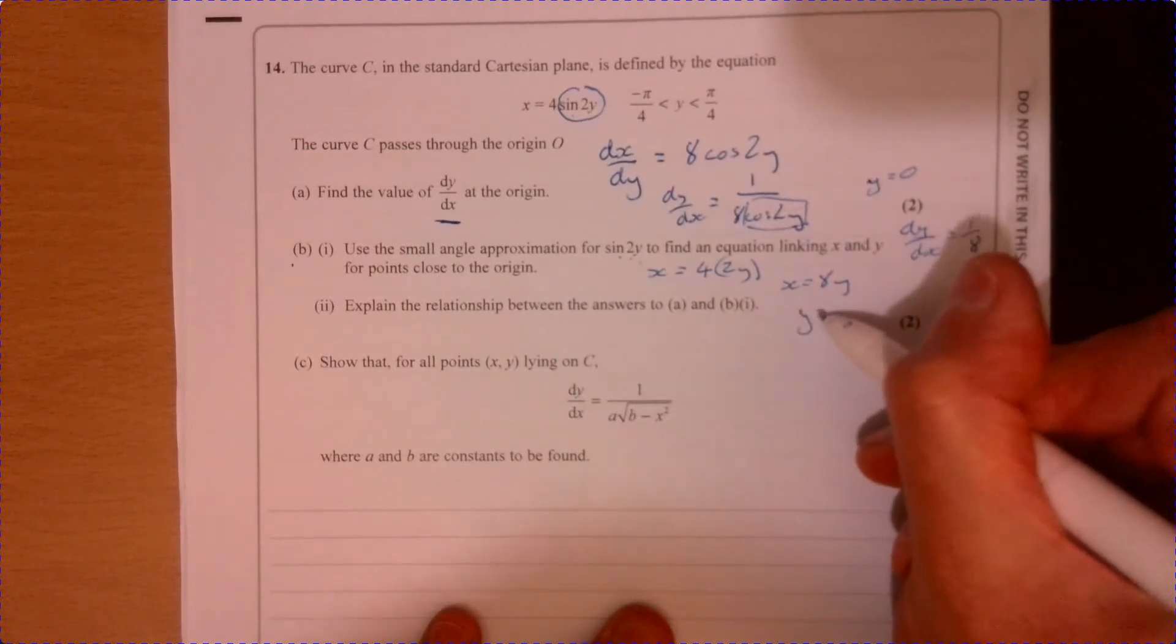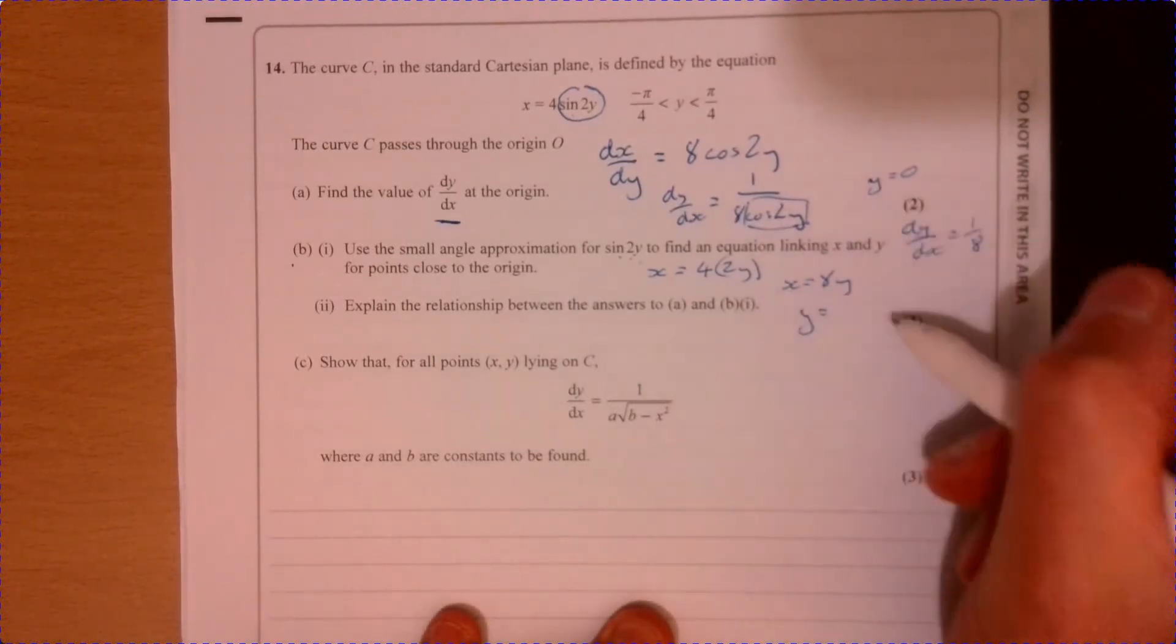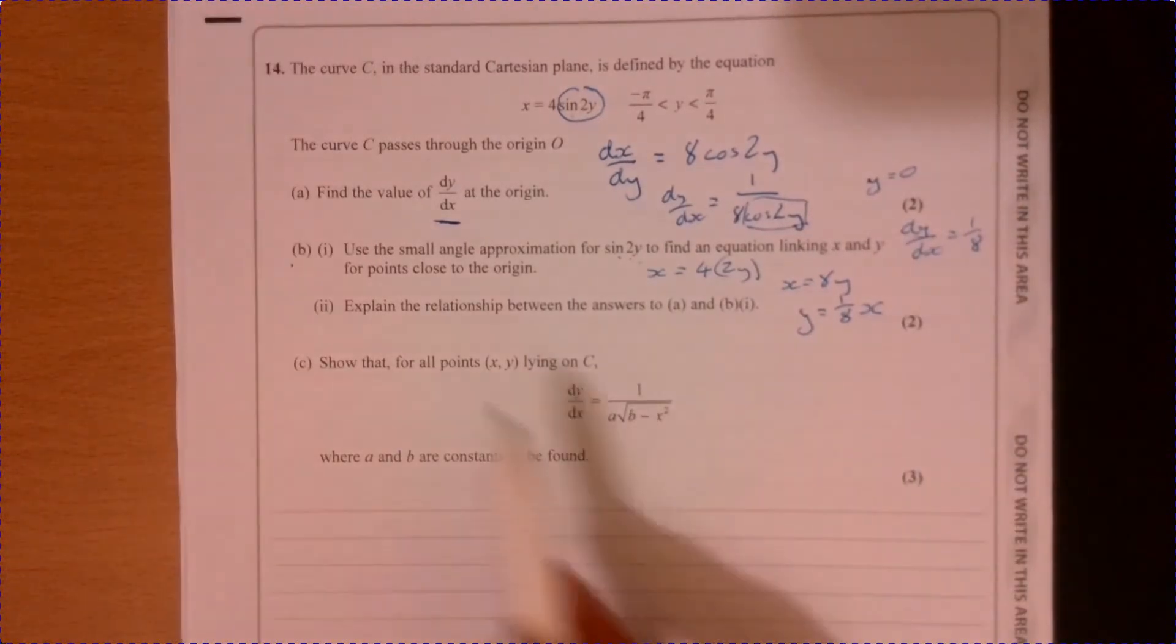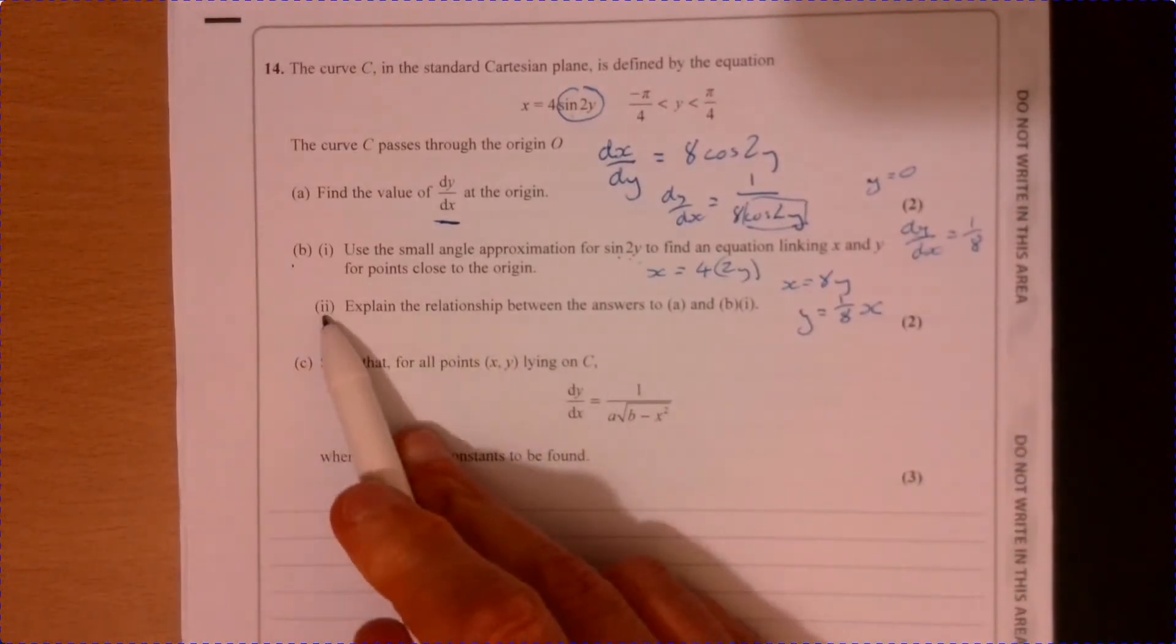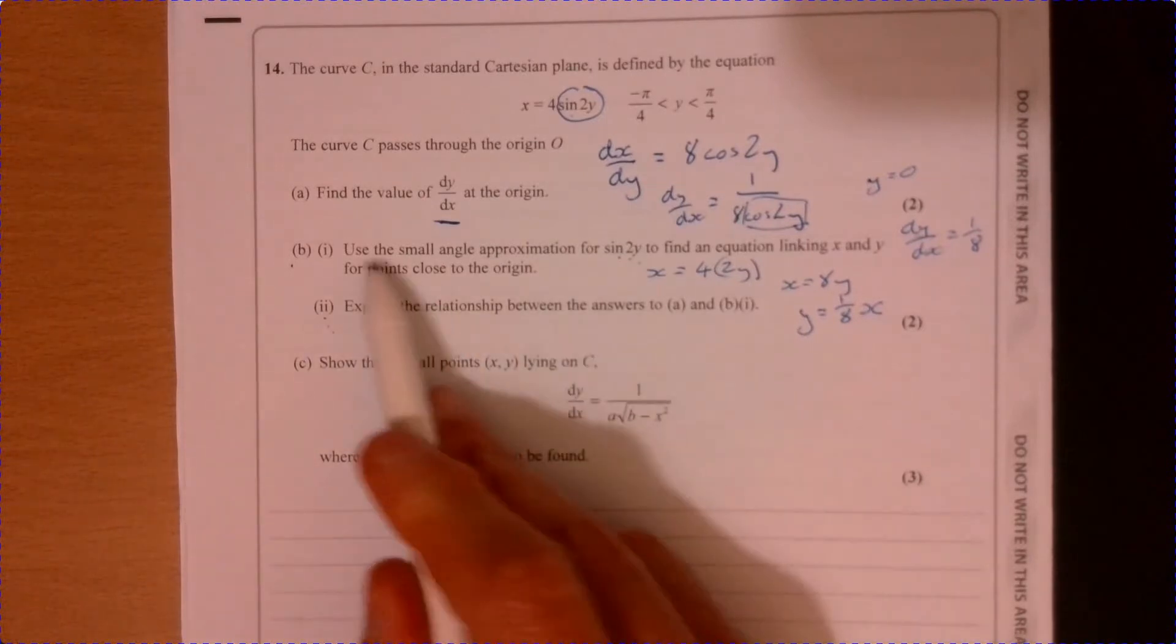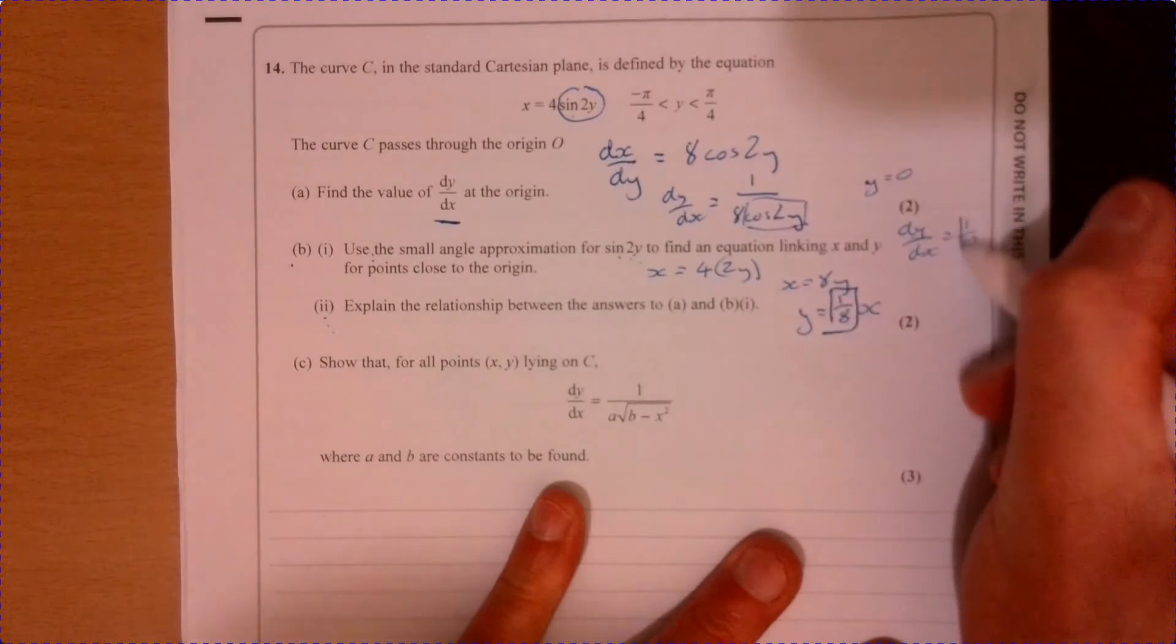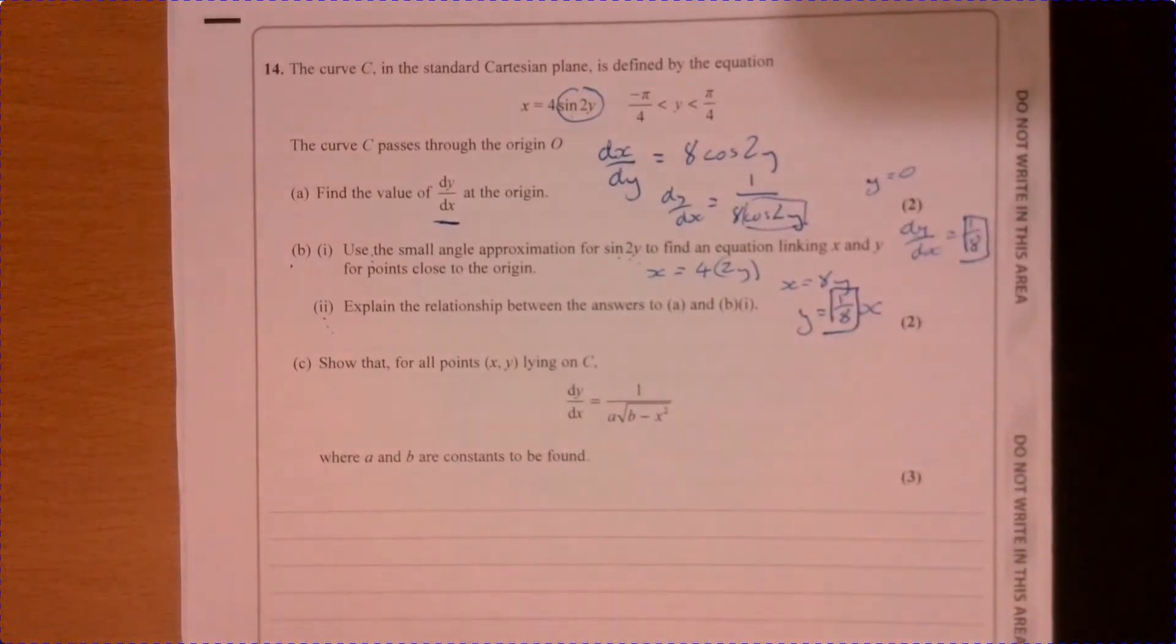So y equals, divide by 8, an eighth of x. Now, if we look at the second part, explain the relationship between these two answers. Well, look, they're the same gradient.